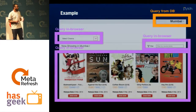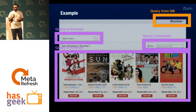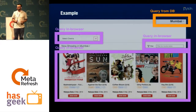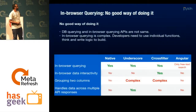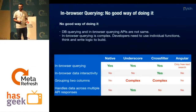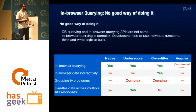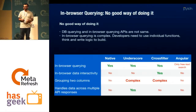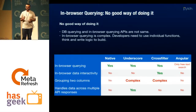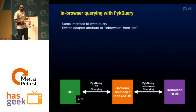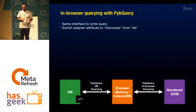For the movie ticket booking app in this mode: the moment you change the city, it makes a DB call, fetches all the data, puts it in the browser, and then all the other queries happen on the fly inside the browser — you do not need to keep going back to the DB. Why is PyQuery better for in-browser querying? We support underscore, cross-filter, and Angular, but Angular only supports free-text search and cross-filter makes complex group-by on multiple columns tough. With PyQuery, we've built a near-SQL interface right inside the browser. You write your PyQuery JSON object exactly as you would in DB mode, change the adapter from DB to in-browser, and it starts working.